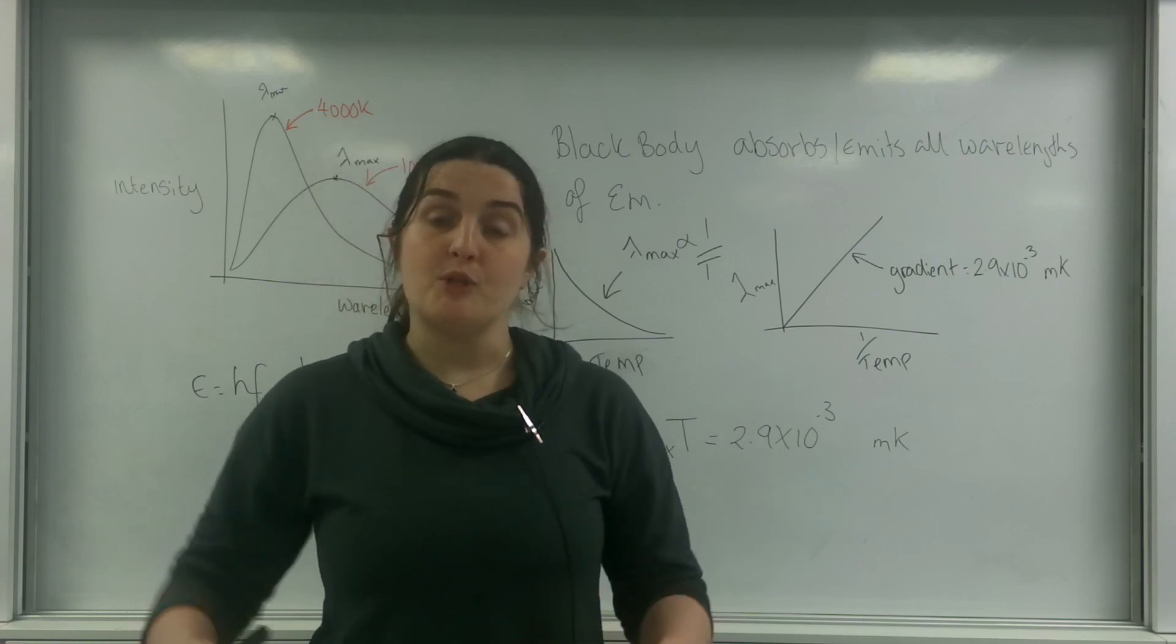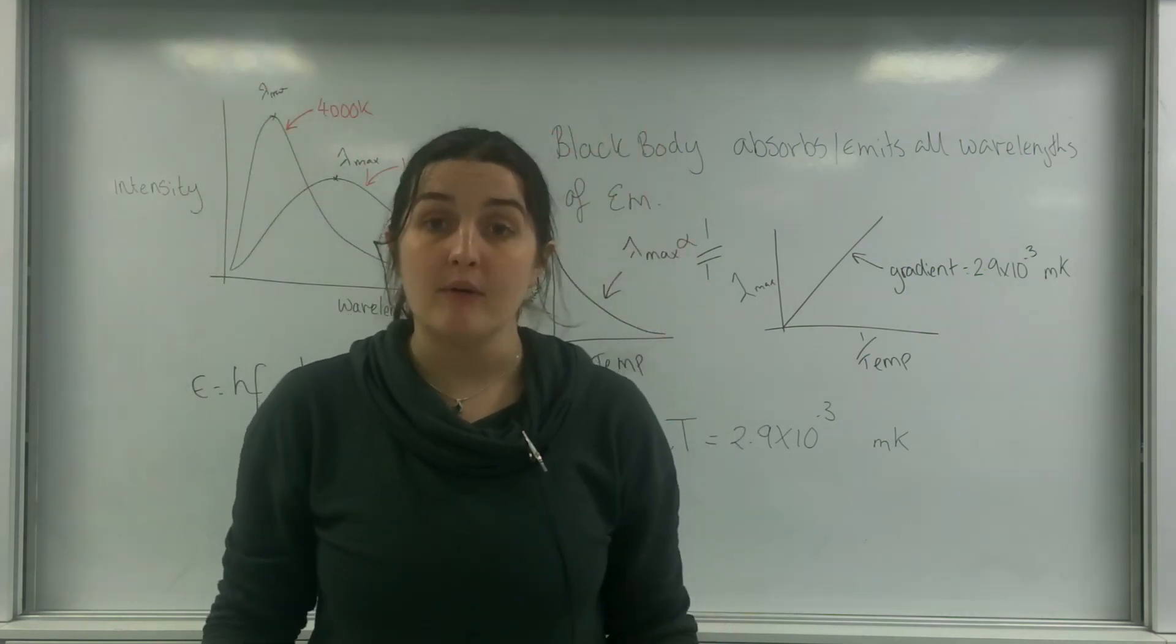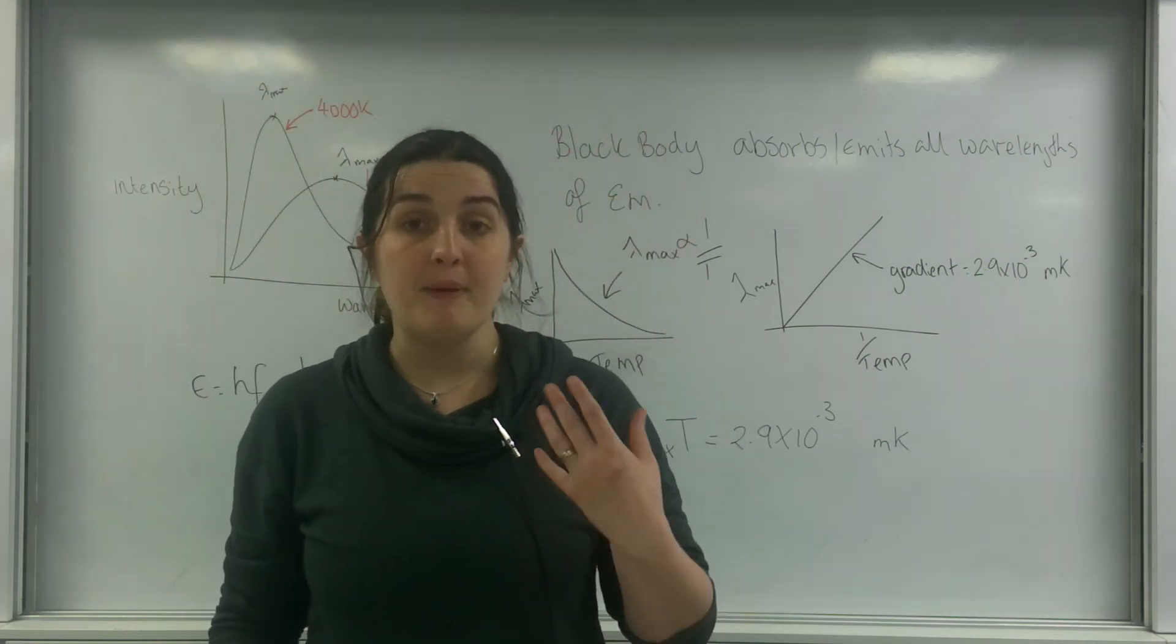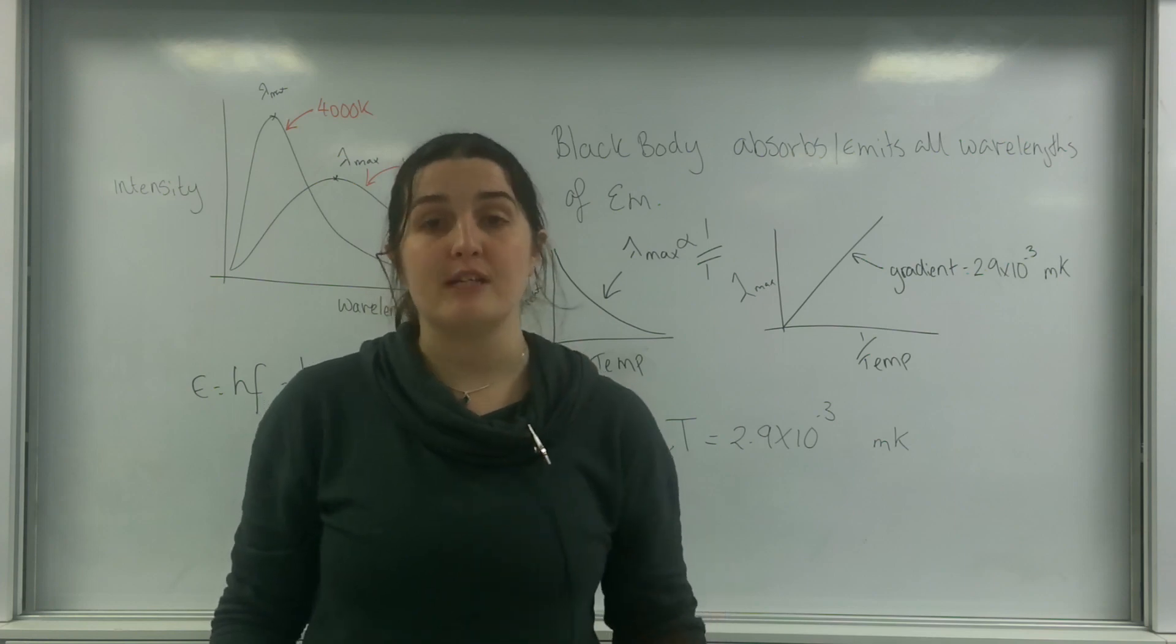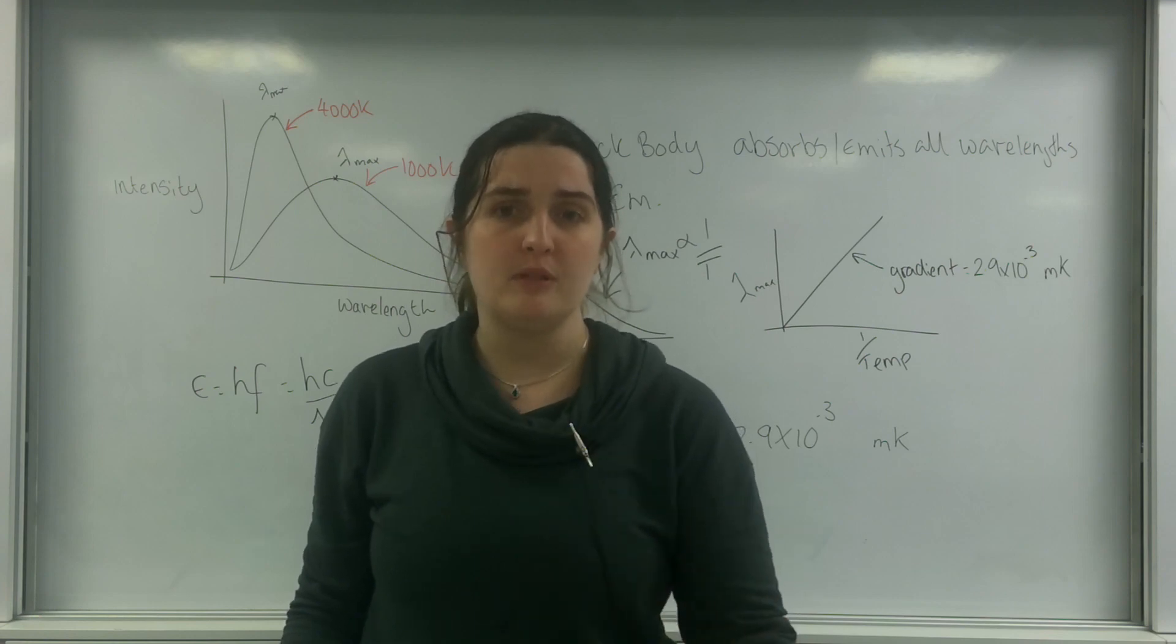The colder stars tend to be of the redder variety. And this is what happens when you get a red giant. The actual outer corona starts to cool down and starts to release a peak wavelength in the red region.